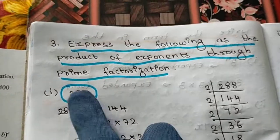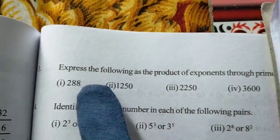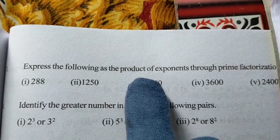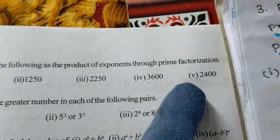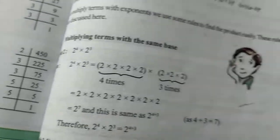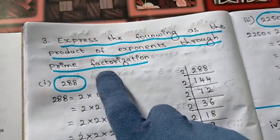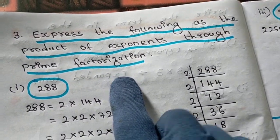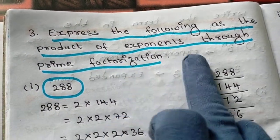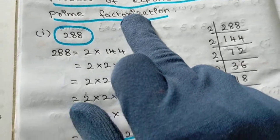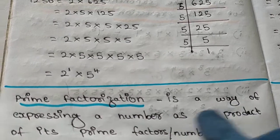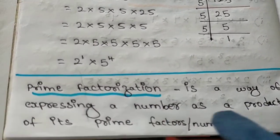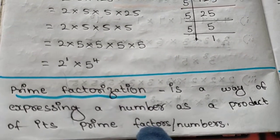Now in this video we are going to start with the third bit. The question is: express the following as the product of exponents through prime factorization. They have given 5 sums here. Hope kids you all remember what prime factorization means. Prime factorization is a way of expressing a number as a product of its prime factors.